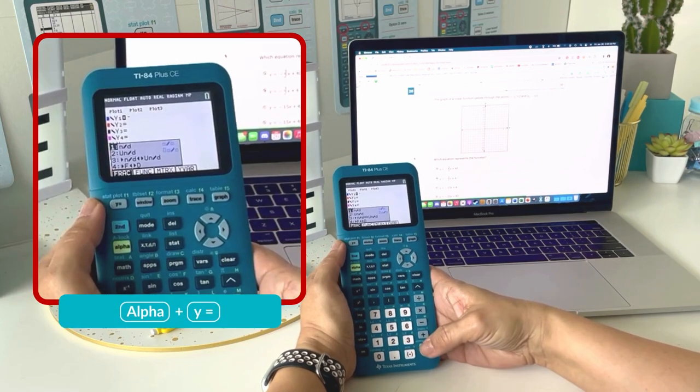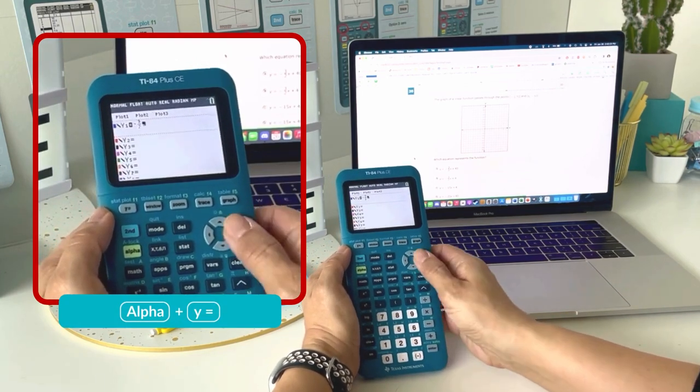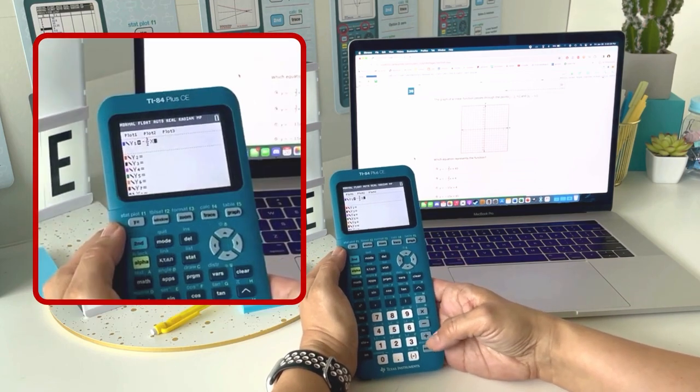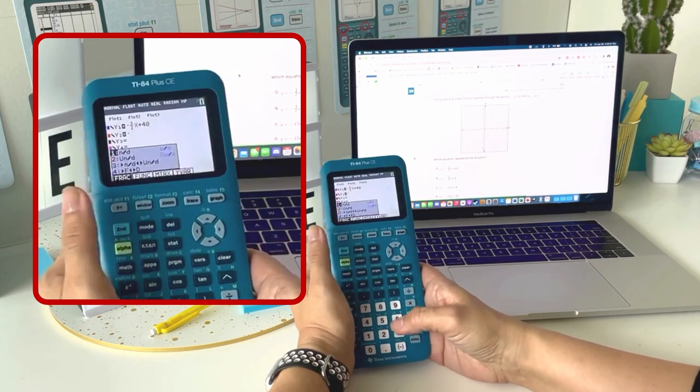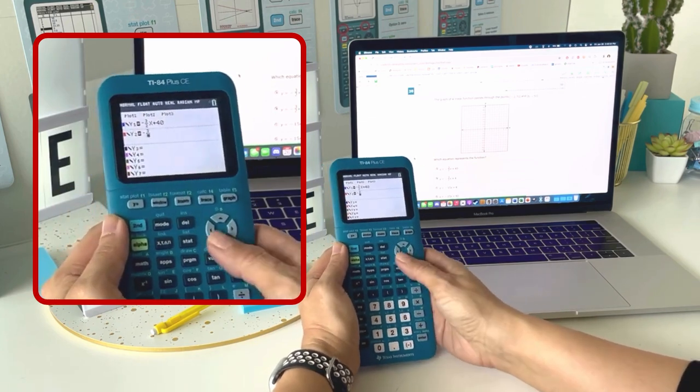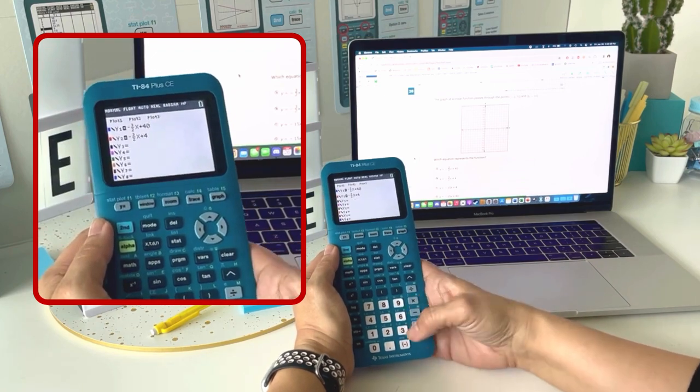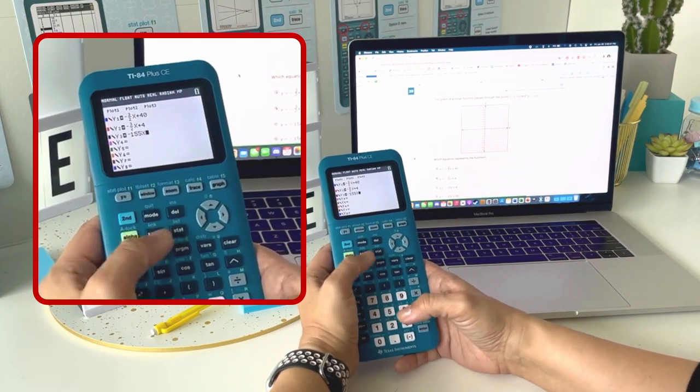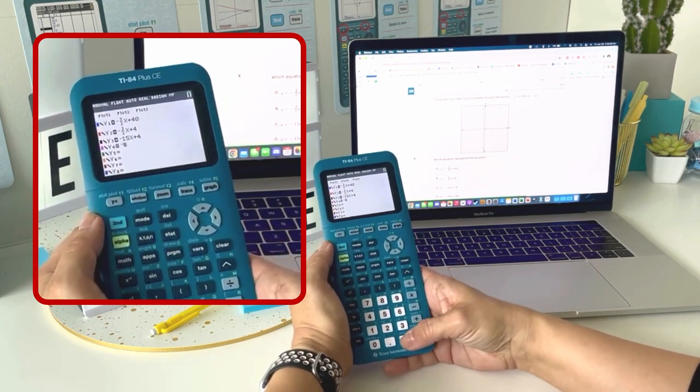I'm going to use the fraction template by pressing alpha y equals and type in each of the equations given. So I have negative 3 halves X plus 40, negative 3 halves X plus 4, negative 15X plus 4, and negative 15X plus 40.